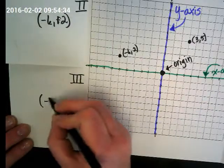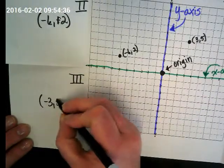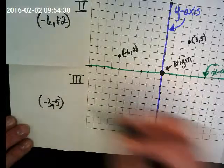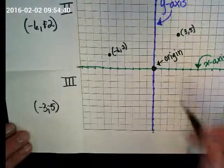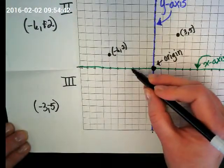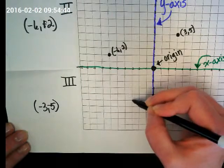We have two points to go. Negative three comma negative five. That's going to move us to the left three and down five right here.